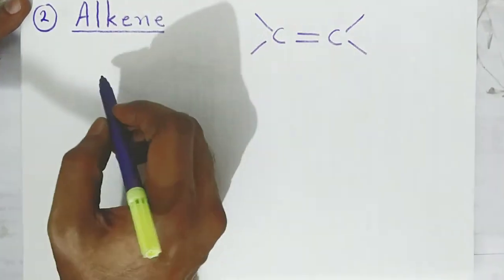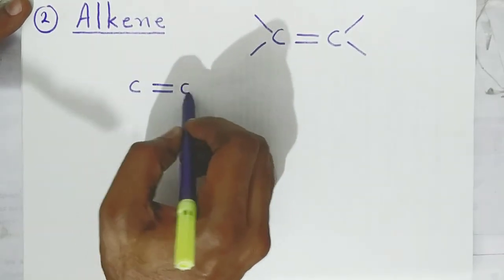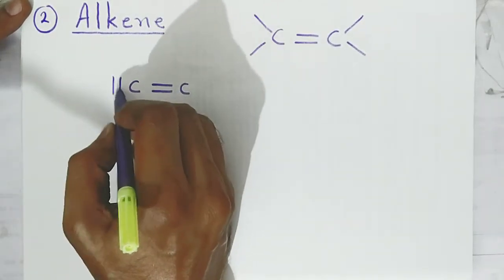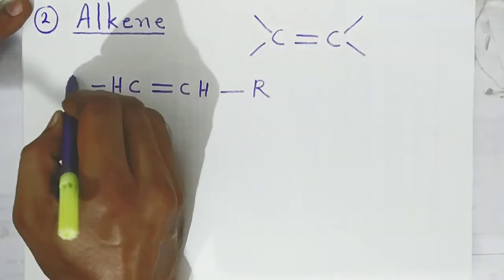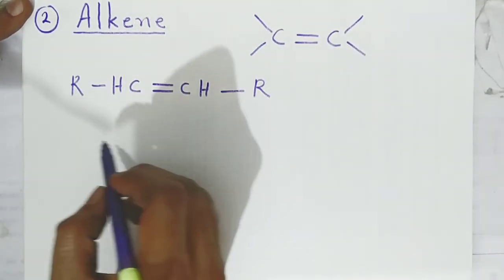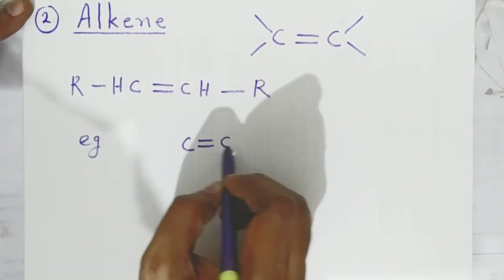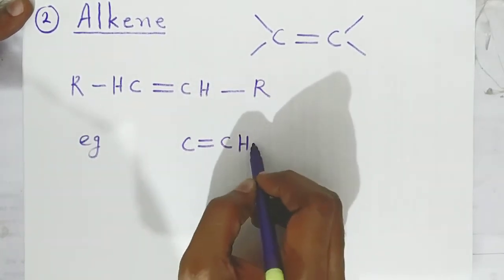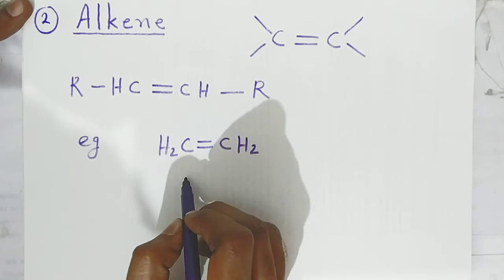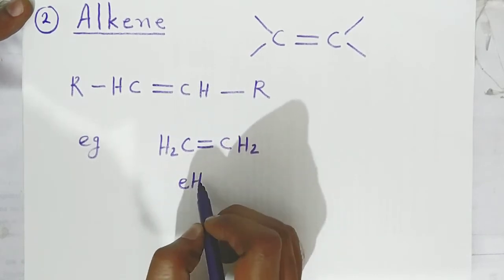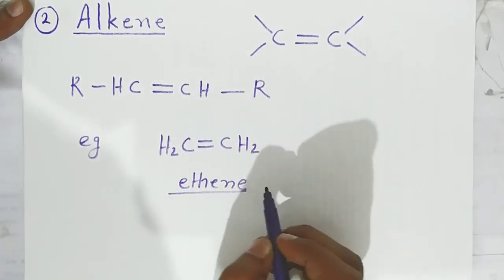We can show the alkene structure with a carbon-carbon double bond where the other valency is filled by hydrogen, or we can put an alkyl group. For example, with a carbon-carbon double bond and remaining valencies replaced by hydrogen, the simplest compound is ethene.